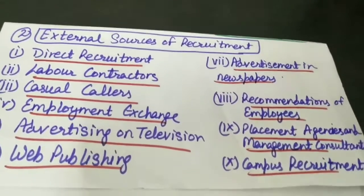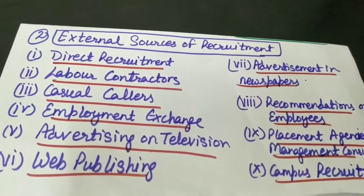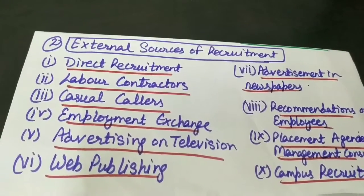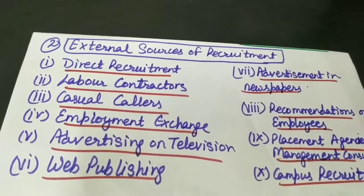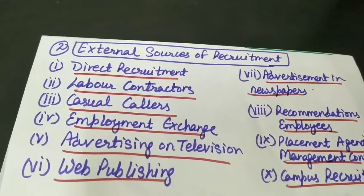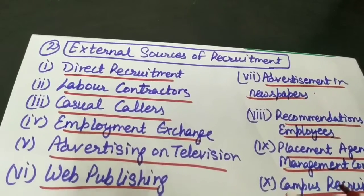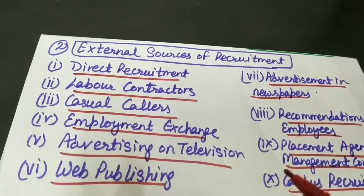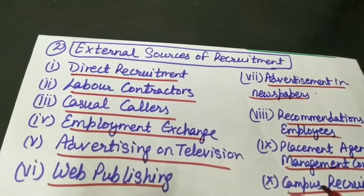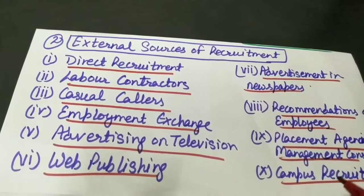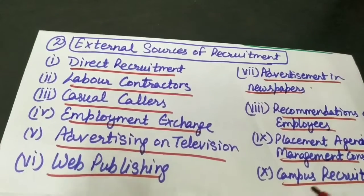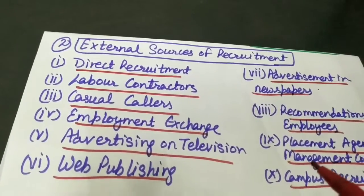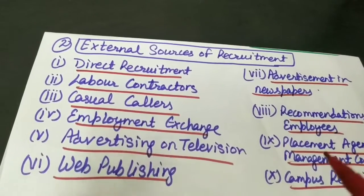Next is advertisements in newspapers, yaani ki advertisements in newspapers or trade and professional journals. Yeh bhi ek external source hain recruitment ka when we require wider choice for filling the vacancy. Is source ki advantage hai ki zada se zada information organization ki aur job ki that can be given in the advertisement, aur jo advertisements hain they give management a wider range of candidates for selection. Iski disadvantage yeh hai ki is source se flood of responses aa sakti hai from quite unsuitable candidates also.